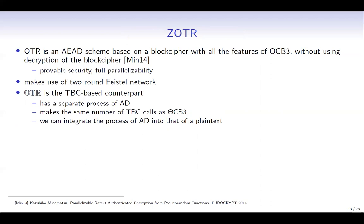Let's move on to Z-OTL. OTL is an AEAD scheme based on a block cipher with all the features of OCB3, and it does not use decryption of the block cipher by making use of a two-round Feistel network. The TBC-based counterpart of OTL has a separate process for AD and makes the same number of primitive calls as ThetaCB3. We can integrate the process of AD into the process of plaintext.